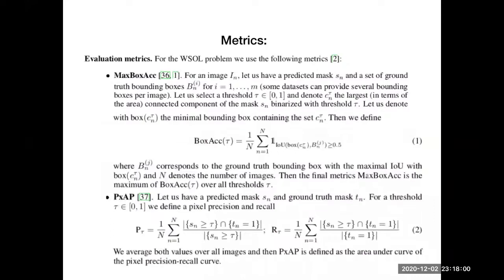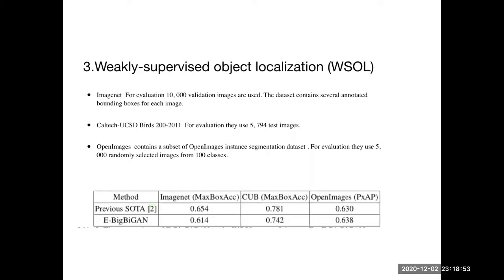They also look at the weakly supervised object localization problem, using a newly defined metric called max box accuracy — a combination of masks and the bounding box around the mask — as well as P-AP, a precision-recall combination. Their performance in weakly supervised object localization is not state-of-the-art compared to supervised methods, but the model is still working.